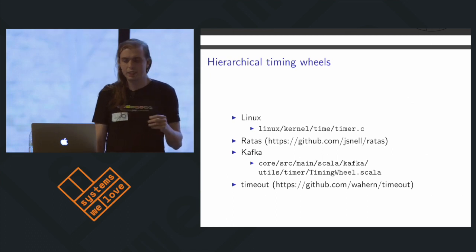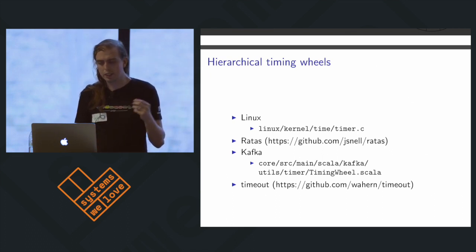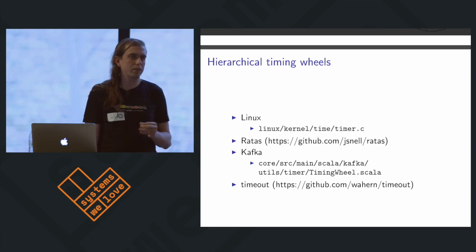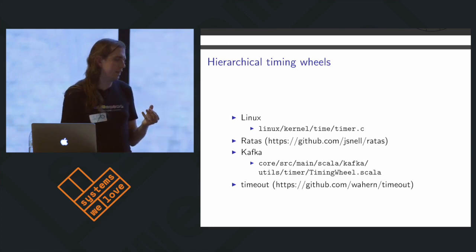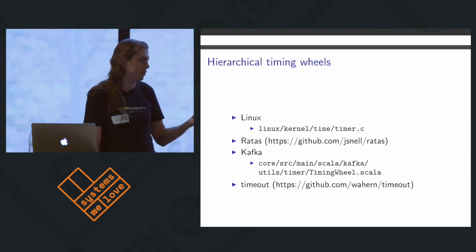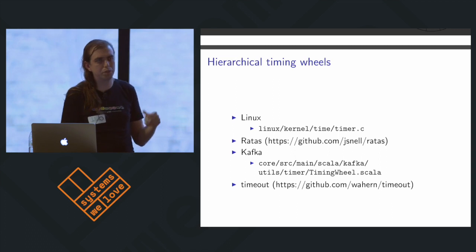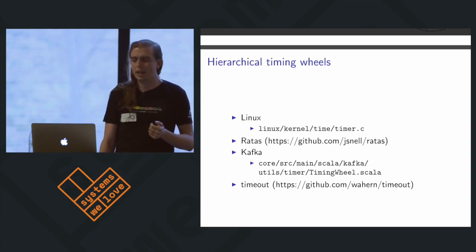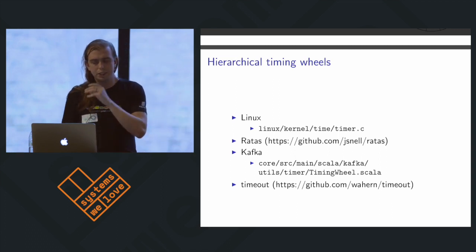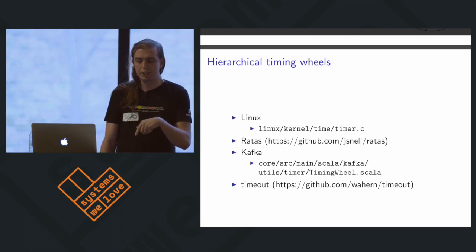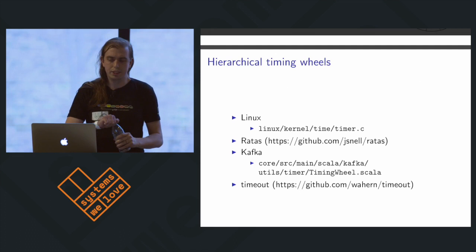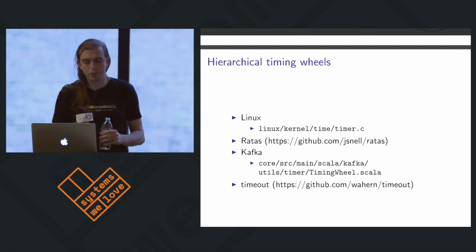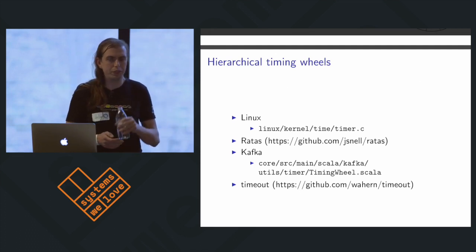In the case of Kafka, there was a well-publicized article about Kafka struggling under the same problem I encountered with many cancelable timers. They were using Java's delay queue, which is basically just a binary heap, and it was not adequate. The interesting thing about their timing wheel implementation is it's extremely simple — almost trivial. If you're looking to understand timing wheels, it's worth reading.